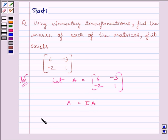Or, we can write matrix 6, minus 3, minus 2, 1 equals matrix 1, 0, 0, 1 multiplied by A.